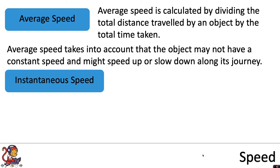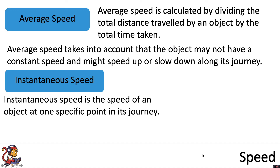For example, if you were walking to school you might walk very fast at the beginning of your journey, and then if you met a friend you might walk a lot slower whilst chatting. When calculating your speed for that journey, we would describe this as your average speed, because you might be going faster and slower at different points — this averages out when you do total distance divided by total time. Instantaneous speed is the speed of an object at one specific point in its journey.